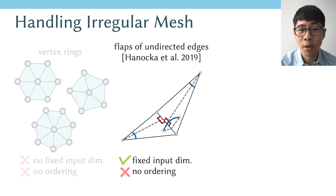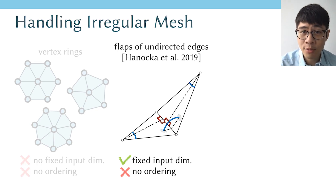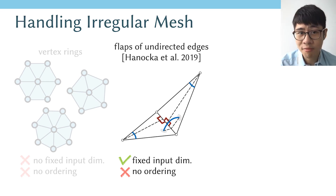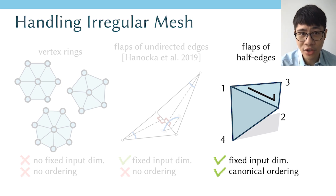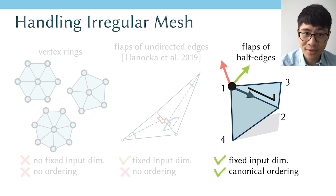Last year, Hanako and colleagues proposed working on undirected edges, considering the convolution stencil as the two adjacent faces associated to each edge — called a flap — giving a fixed input dimension of four neighboring vertices. But there is still no canonical ordering. In this work, we propose to use half-flaps: two adjacent faces associated to each half-edge. This gives a fixed input dimension, and more importantly, a canonical ordering between the vertices. This allows us to define a local coordinate system for each half-flap, which is key to making the network invariant to rigid motion.